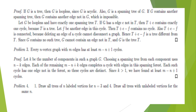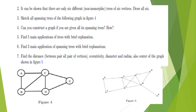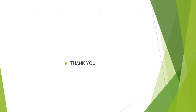Exercise problems: draw all trees of n labeled vertices for n equal to 3 and 4; draw all trees with unlabeled vertices for the same n. There is also a set of additional problems for you to solve on your own. Thank you.